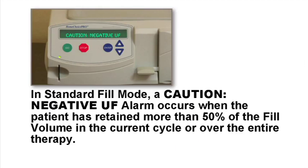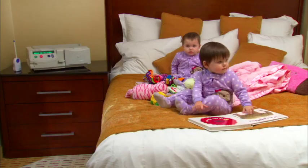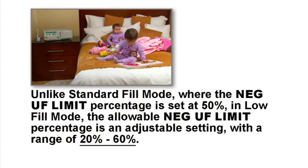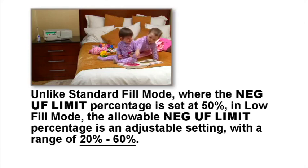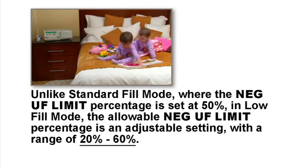In standard fill mode, a caution negative UF alarm occurs when the patient has retained more than 50% of the fill volume in the current cycle or over the entire therapy. Unlike standard fill mode, where the negative UF percentage is set at 50%, in low fill mode, the allowable negative UF percentage is an adjustable setting with a range of 20 to 60%.